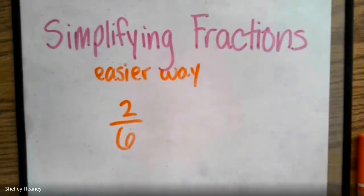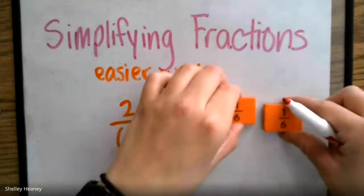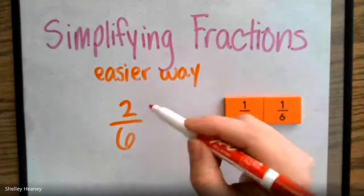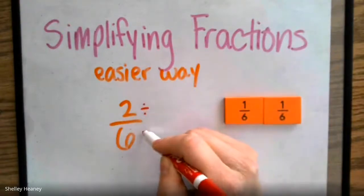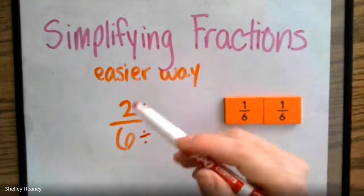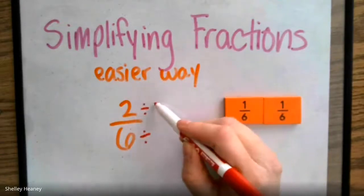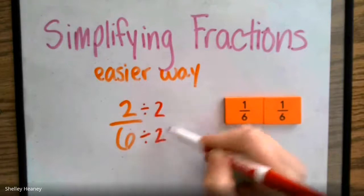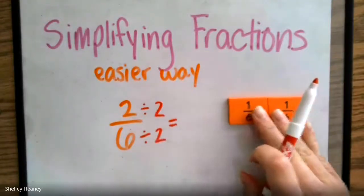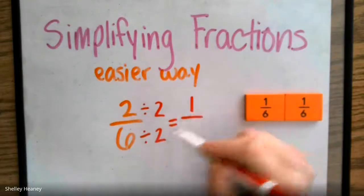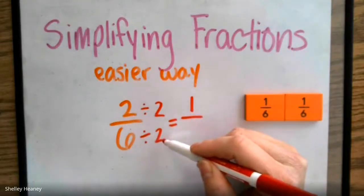If I have 2 sixths, what can I divide on the top and the bottom to make this fraction smaller? Thinking about my greatest common factor, I know that I can try dividing by 2. These numbers are even, so dividing by 2 might be a good choice. 2 and 2. What's 2 divided by 2 going to give us? 2 divided by 2 gives us 1. What about 6 divided by 2?